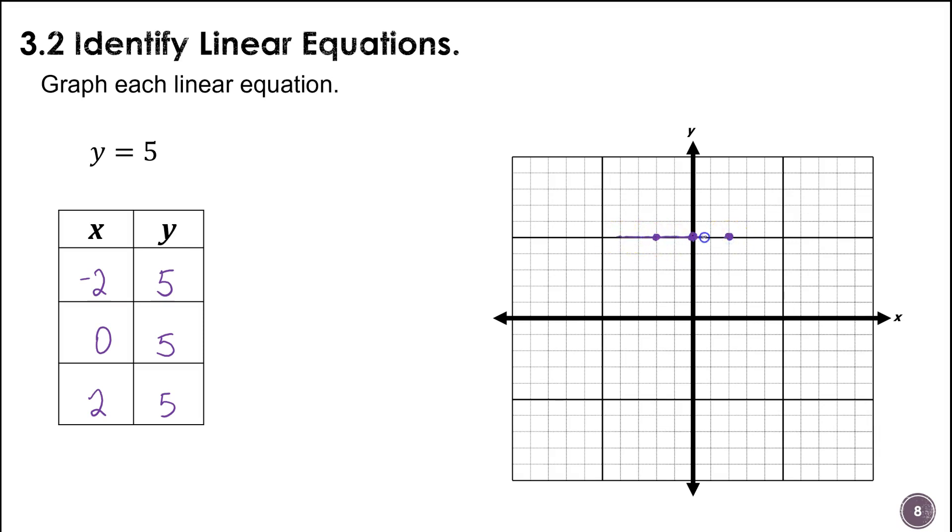But this is something you'll be learning. So when it just says y equals a number, that is a horizontal line on the graph. And we also have vertical lines, so we'll see those at some point.